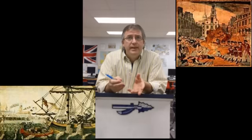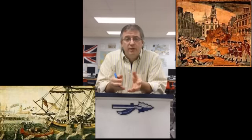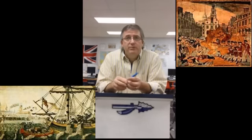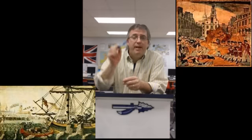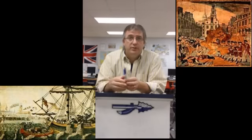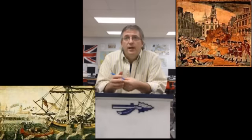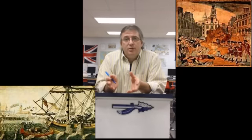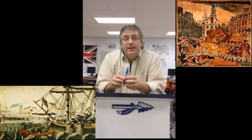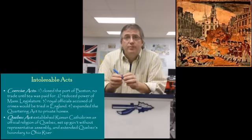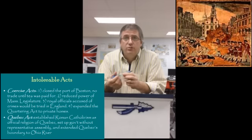In 1773, Britain passes the Tea Act. The Sons of Liberty will respond by dressing up as Native Americans, boarding the British ships, and throwing 20,000 pounds of tea into the harbor — that's about 10 tons of tea worth 20,000 pounds. The British respond by shutting down Boston Harbor, suspending democracy in Massachusetts, sending more troops in, and passing the Intolerable Acts, which are the Quebec and Coercive Acts.